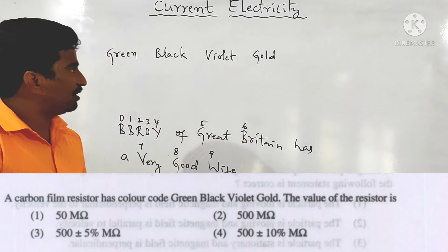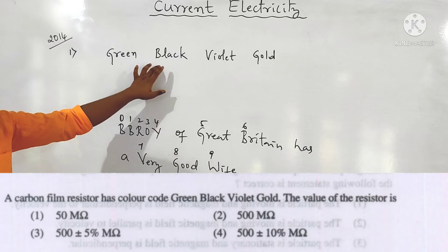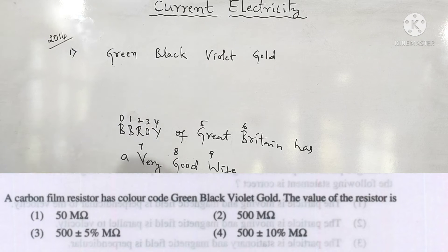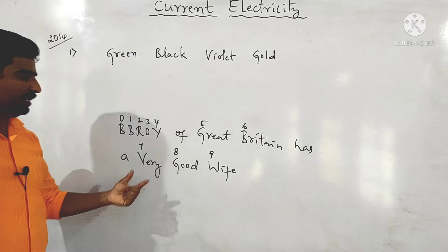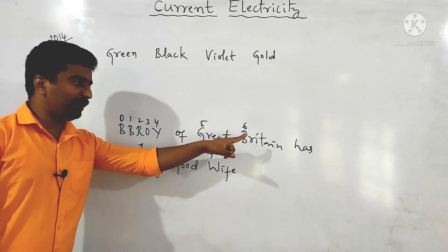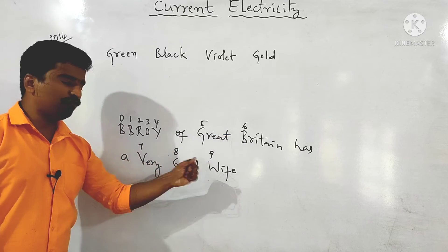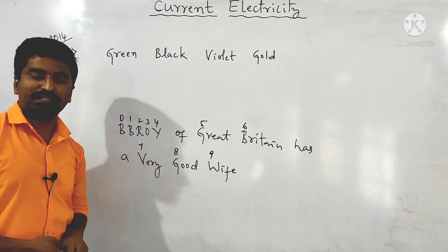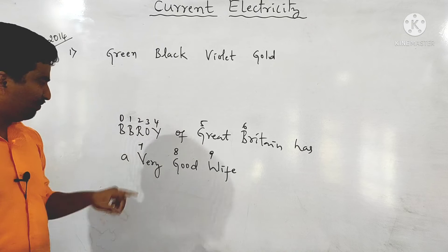The color code given is: green, black, violet, gold. Using the mnemonic 'B.B. Roy of Great Britain has a very good wife wearing gold silver necklace,' the capital letters indicate the colors starting from black = 0.